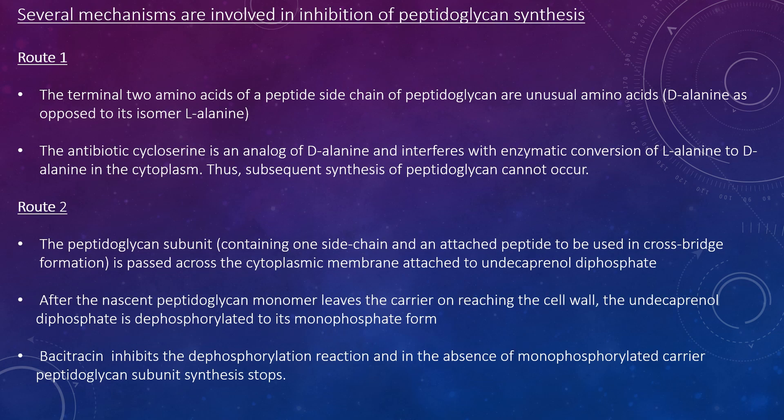Looking at the mechanisms involved in inhibition of peptidoglycan synthesis: Route 1 involves the terminal two amino acids of the peptide chain of peptidoglycan, specifically the unusual amino acid D-alanine as opposed to its isomer L-alanine. The antibiotic cycloserine is an analog of D-alanine and interferes with the enzymatic conversion of L-alanine to D-alanine in the cytoplasm, so subsequent synthesis of peptidoglycan cannot occur.